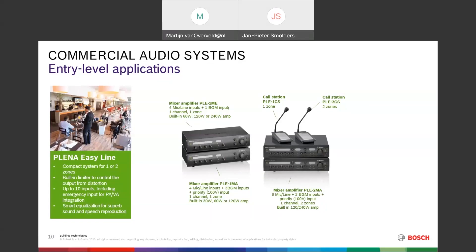Below that is the PLN 1 — a one-channel mixer amplifier that can also address one zone, but it has three BGM inputs plus a priority input. This makes it possible to connect to a voice alarm system via the priority input at 400 volts, so you can connect to a simple loudspeaker line already in your venue. It comes in three versions: 30W, 60W, or 120W.